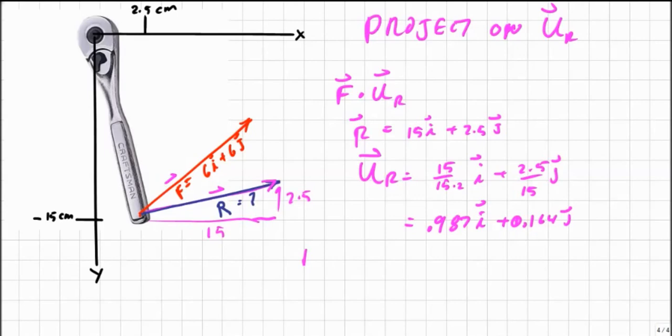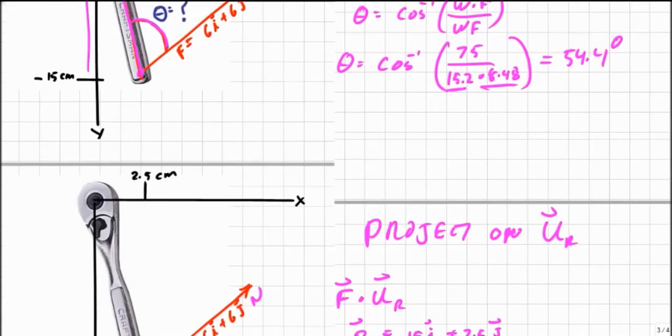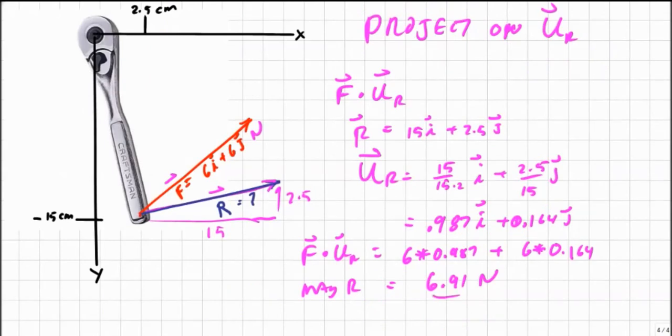Now I can project my force using my dot product. So F dot unit vector of R equals, and F we said was 6 i plus 6 j, so I've got 6 times 0.987 plus 6 times 0.164. So the magnitude of this force along the R direction equals that projection, that dot product, equals 6.91 newtons. That compares to our force before of 8.48. We got 6.91, that seems reasonable given the angles and given our geometry.